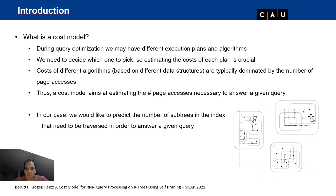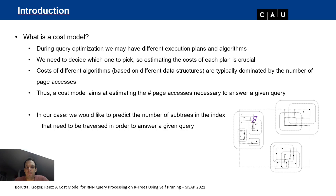For example, the root is always accessed, but then on the next level only some pages are traversed. On the lower level we might access only this node and this node — perhaps four nodes total, minus one since the root is typically in memory. That is the goal: estimating how many page accesses are needed.